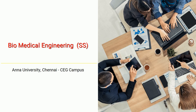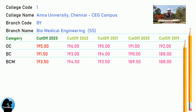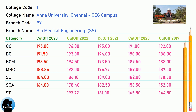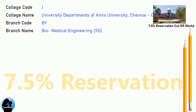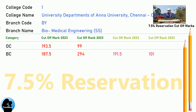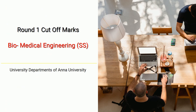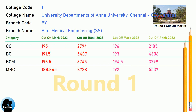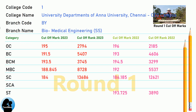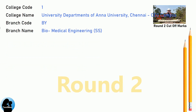DNA Cut-Off for Anna University Chennai CEG Campus in Biomedical Engineering. DNA 7.5 Reservation Cut-Off for Anna University Chennai CEG Campus in Biomedical Engineering. DNA Round 1 Cut-Off for Anna University Chennai CEG Campus in Biomedical Engineering. DNA Round 2 Cut-Off for Anna University Chennai CEG Campus in Biomedical Engineering.